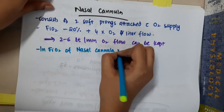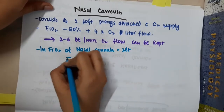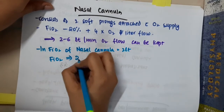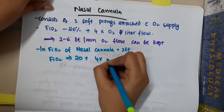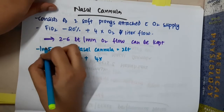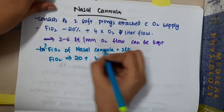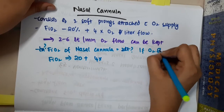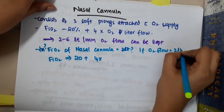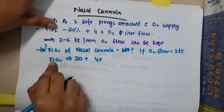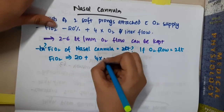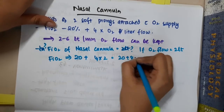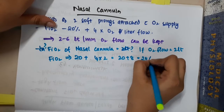For example, if the oxygen flow is 2 liters per minute, then FiO2 equals 20 plus 4 times 2, which is 20 plus 8, giving 28 percent.